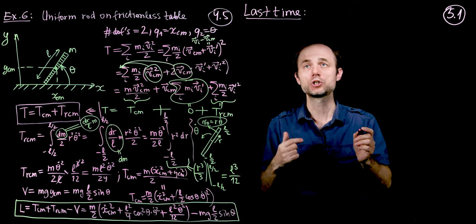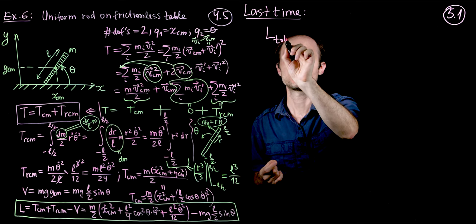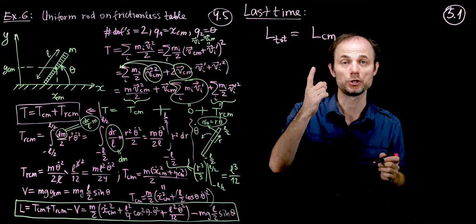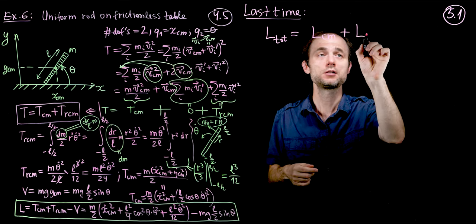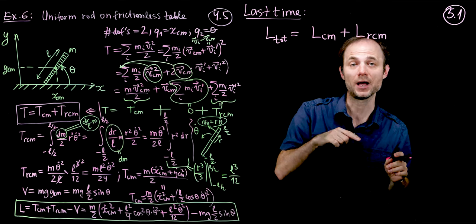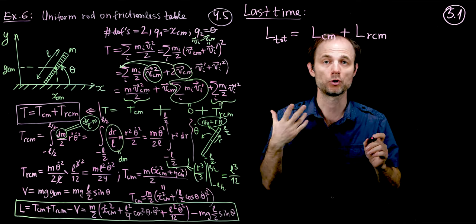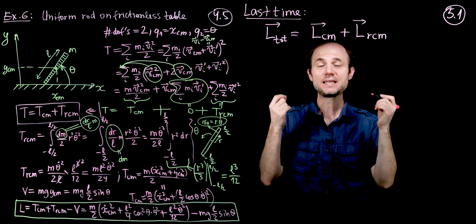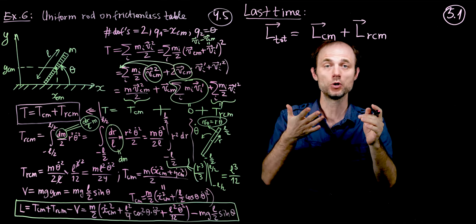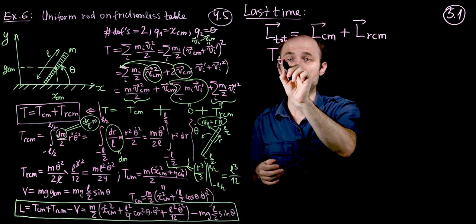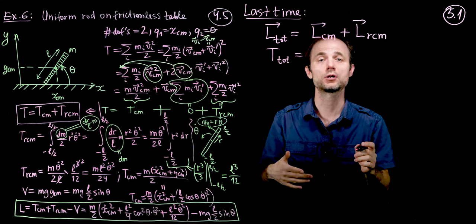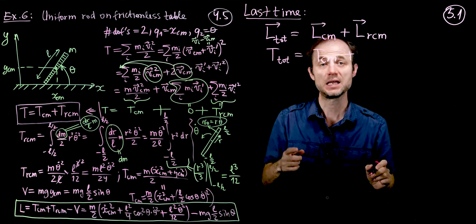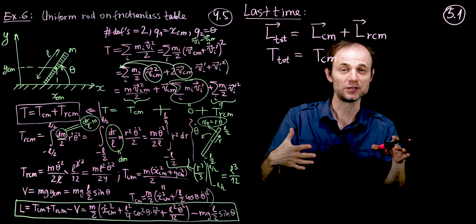A while ago we showed that if we wanted to compute the angular momentum of a system of particles, then that angular momentum would be the sum of the angular momentum associated with the motion of the center of mass, plus the angular momentum associated with the motion around the center of mass — relative to the center of mass. In a very similar way, we have shown that the total kinetic energy of a system of particles can be decomposed in the same way: kinetic energy of the center of mass, plus kinetic energy associated with the motion relative to the center of mass.